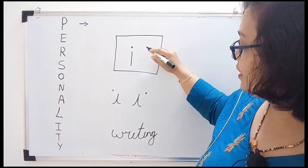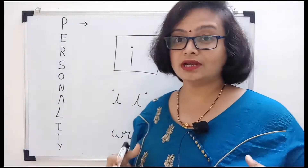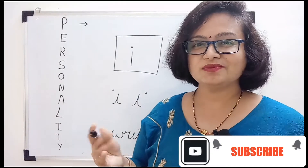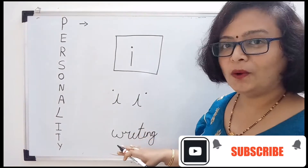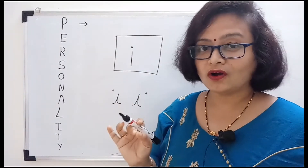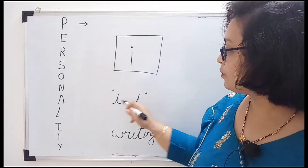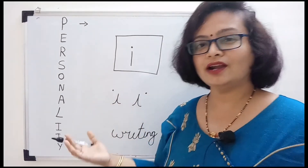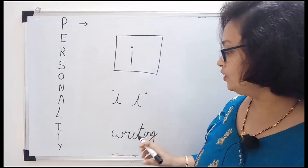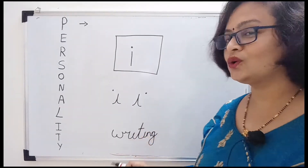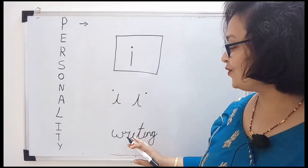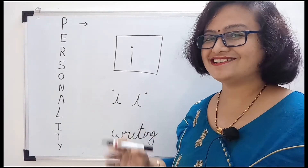There are three main types of letter 'i' we will look at, though different writers produce many variations. The first type, where the dot is placed directly above, denotes strong concentration and precision. The second type, where the dot is placed on the right or left side, denotes lack of attention and lack of precision. The third type, where the writer has totally forgotten to place the dot, denotes laziness and negligence.